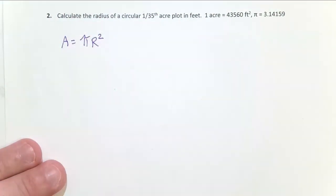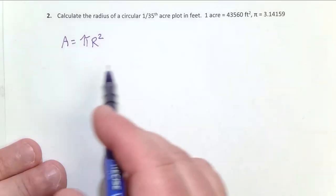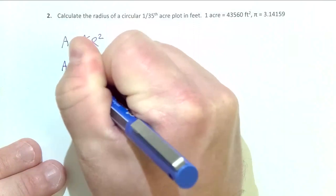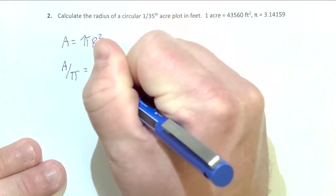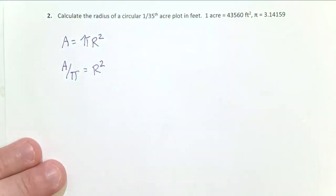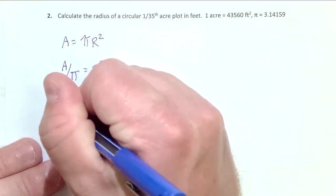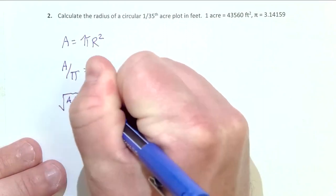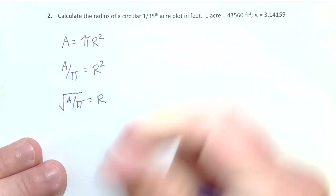And so I need to solve this for R. I'm going to start by dividing both sides of the equation by pi. Area over pi equals R squared. And then from there, I'm going to get rid of that square on R by taking the square root of both sides of the equation. So I end up with square root of area over pi being equal to R. So that's the general form of the equation I need for this problem.